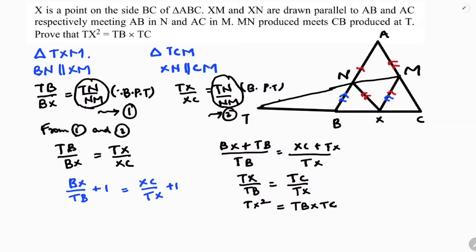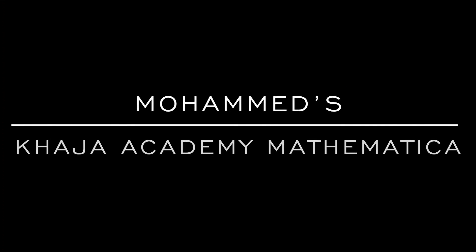In this way we simplify. After applying BPT, just do invertendo, then componendo — which is adding one on both sides — to directly get TX² = TB × TC.